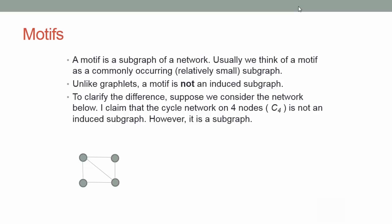We can think of a motif as a subgraph of a network. In particular, we can think of it as a small, reoccurring or commonly occurring subgraph. The reason we think of a motif as a commonly occurring subgraph is because in most applications, especially in biological applications, these small reoccurring subgraphs have a functional property assigned to them.